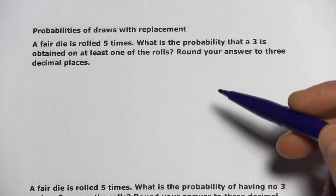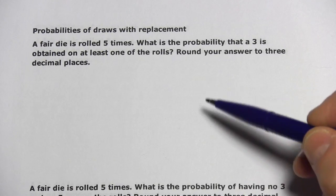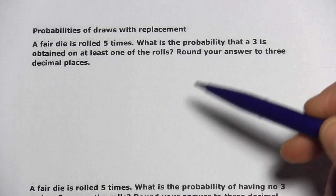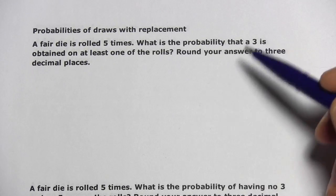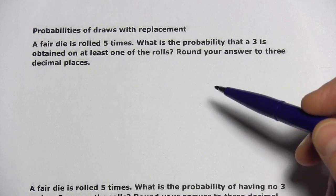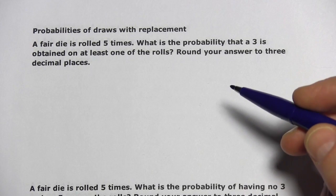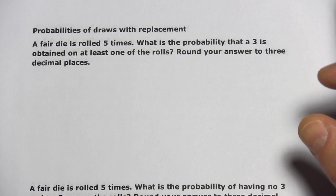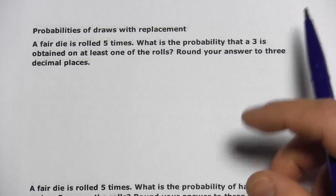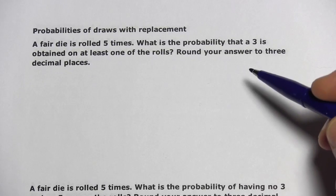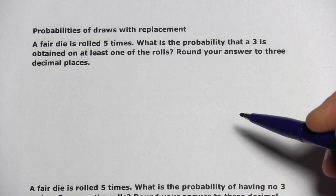In these problems, we're looking at what's called draws with replacement. That's the kind of situation where you have a bag of marbles, some red and some green, and you're asked to pull three out. But you pull one out, check its color, then throw it back in again and mix them all up. Each pull is from the full number of marbles. That's a draw with replacement.